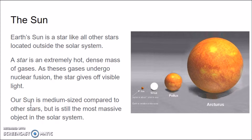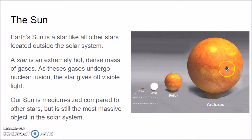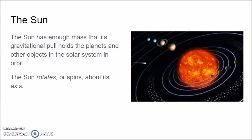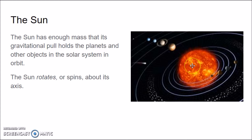Our Sun is medium-sized compared to other stars, but it's still the most massive object in our solar system. Compared to stars like Sirius, Pollux, and Arcturus, ours is pretty small, but medium-sized because there are smaller stars too. The Sun makes up 99% of the mass of our solar system. It has enough mass that its gravity holds the planets and other objects in orbit around it. The Sun also rotates or spins on its axis while traveling through space.